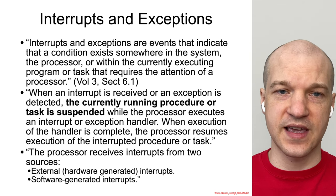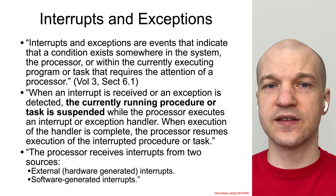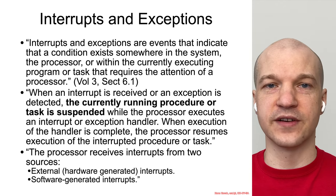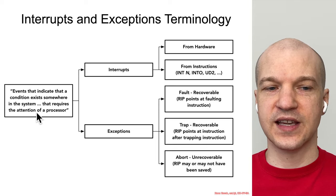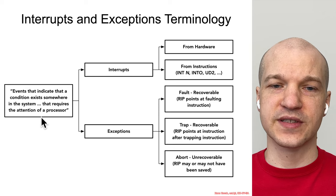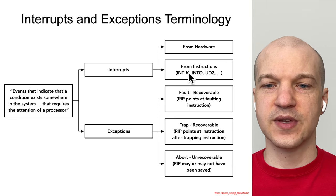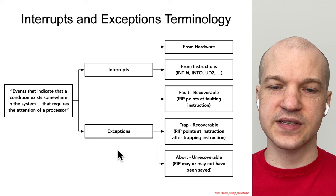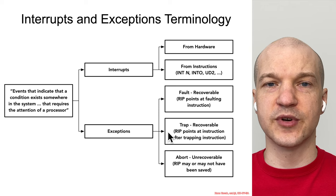So what is this saying? We've got interrupts and we've got exceptions, and for both of them, they both have to do with when something just happened on the system and it needs to halt whatever it's doing and go handle whatever happened. There are two types: interrupts, which include hardware interrupts and software interrupts that occur because of assembly instructions, and exceptions, which have three types: faults, traps, and aborts — we'll talk about each of those in a little bit.